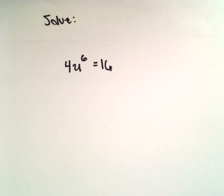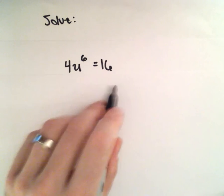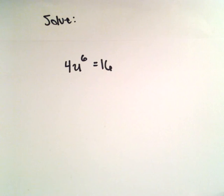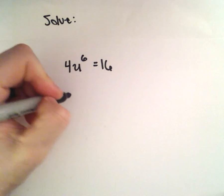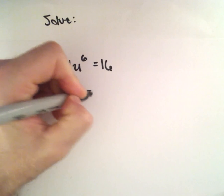Here we're going to solve the equation 4 times u to the 6th equals 16. The first thing I'm going to do is divide both sides by 4. That'll give us u to the 6th equals 4.